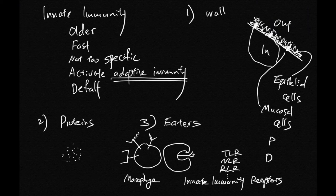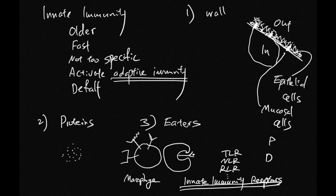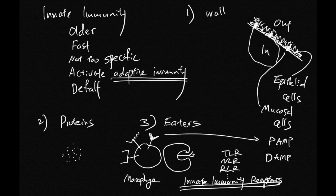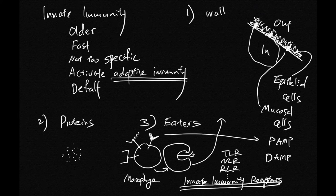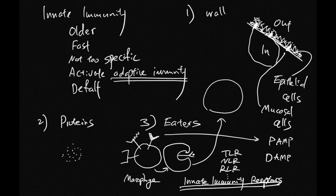There are names for these special molecules that innate immunity receptors can detect. They're called PAMPs and DAMPs—pathogen-associated molecular patterns, damage-associated molecular patterns. These receptors can detect DAMPs or PAMPs, and then detection of this leads to engulfing of these molecular patterns internally.